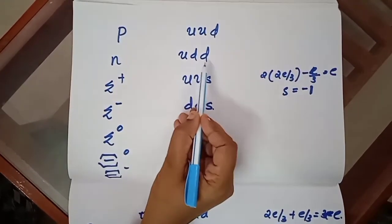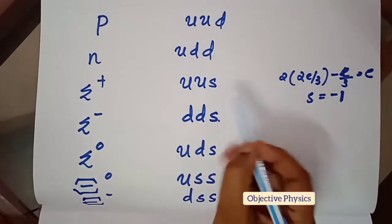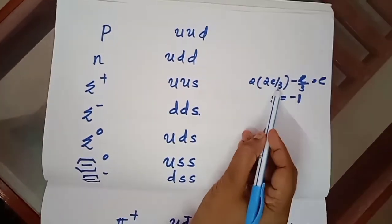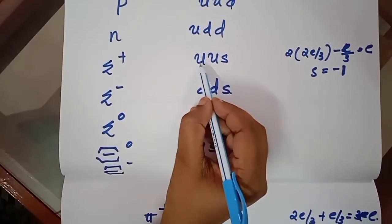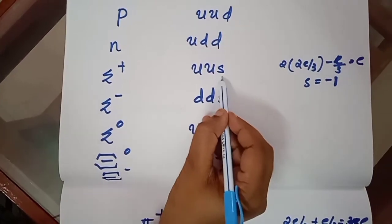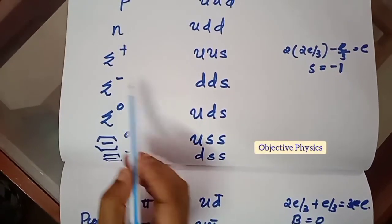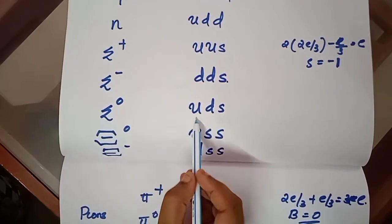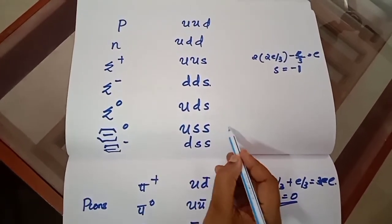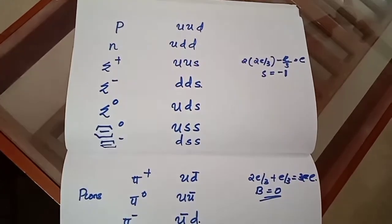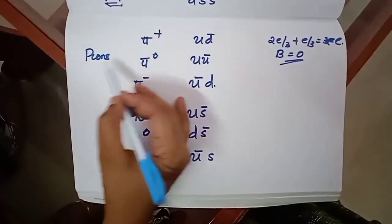For sigma plus (Σ+), the combination is uus: 2×(2e/3) + (−e/3) = +e, and the strangeness number is −1. For sigma minus (Σ−) the combination is dds, sigma zero (Σ0) is uds. Cascade zero (Ξ0) is uss and cascade minus (Ξ−) is dss. The cascade particles have strangeness number −2, meaning two strange quarks are present.